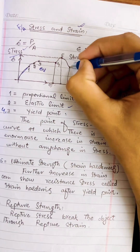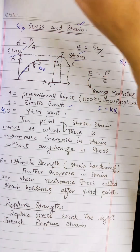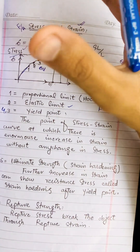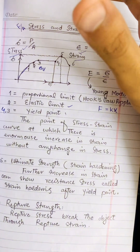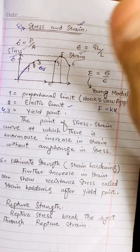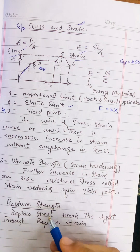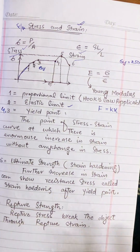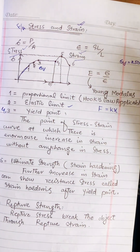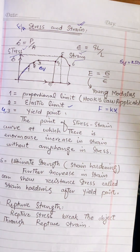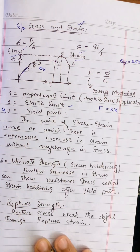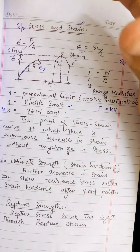The sixth point is rupture strength. Rupture stress is the point at which fracture occurs in the body — the body shows brittle properties or breaks. When an object gains so much strain and deformation that it breaks, we call that point the rupture strength or rupture point.